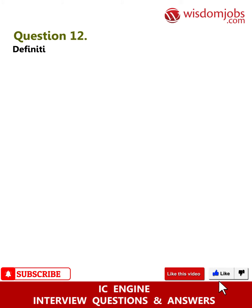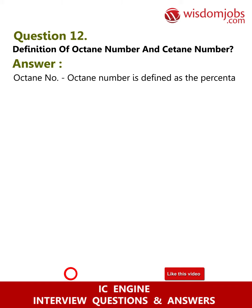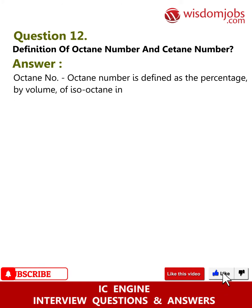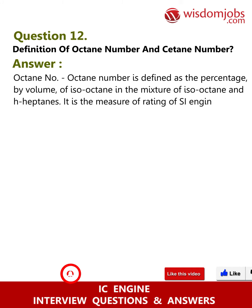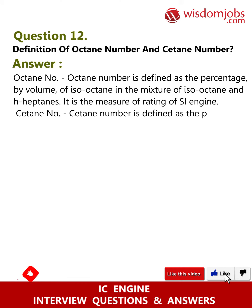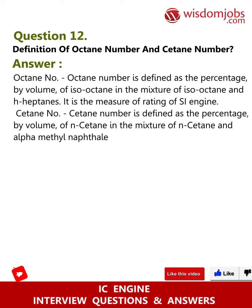Question 12: What is the definition of octane number and cetane number? Octane number is defined as the percentage by volume of iso-octane in a mixture of iso-octane and n-heptane. It is the measure of the rating of the SI engine. Cetane number is the measure of the rating using iso-octane and alpha-methyl naphthalene, and it is used as the measure of rating for CI engines.